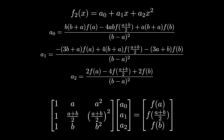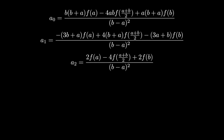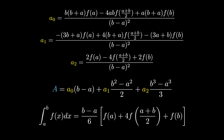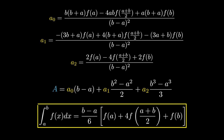Using the area equation from the previous part and substituting back the values of a0, a1, and a2, we arrive at: the integral from a to b of f(x) dx = (b−a)/6 · [f(a) + 4·f((a+b)/2) + f(b)]. This is the Simpson's one-third rule formula.